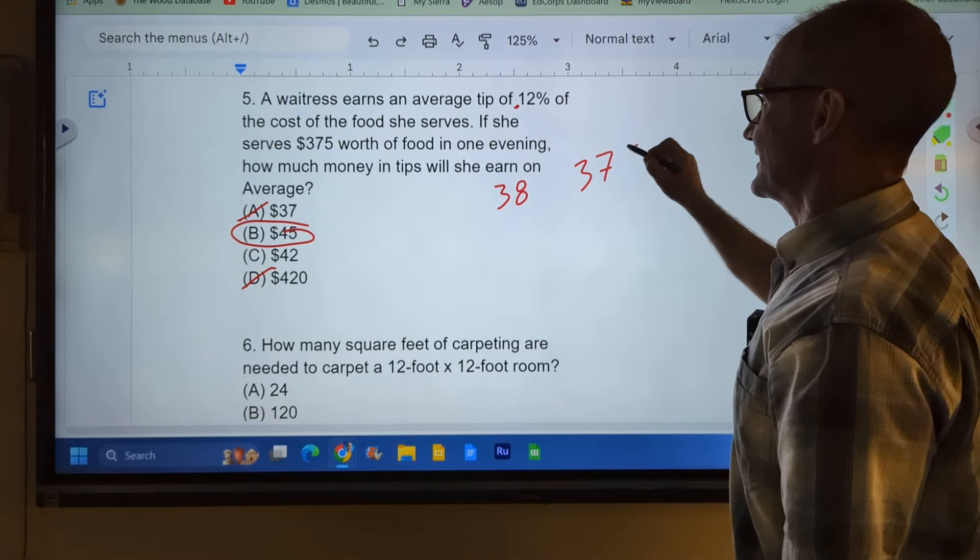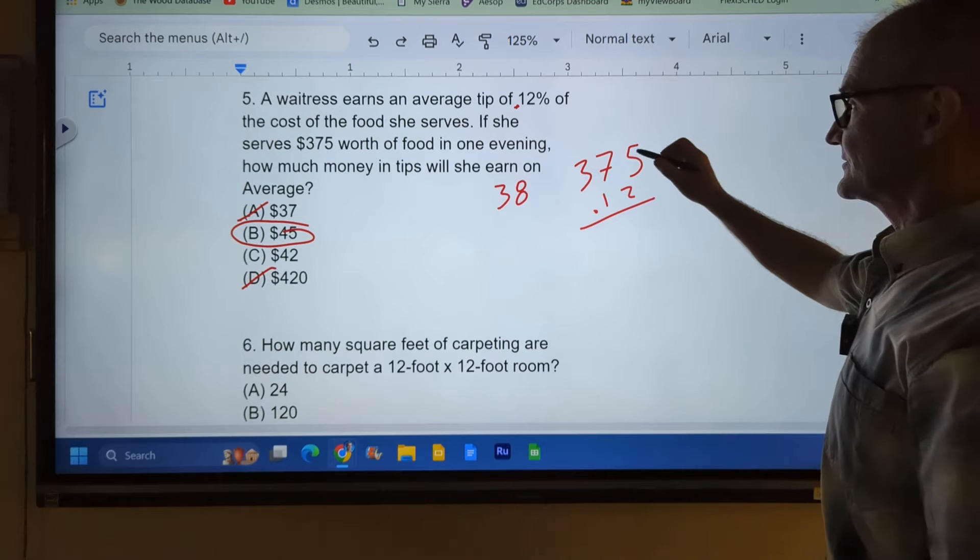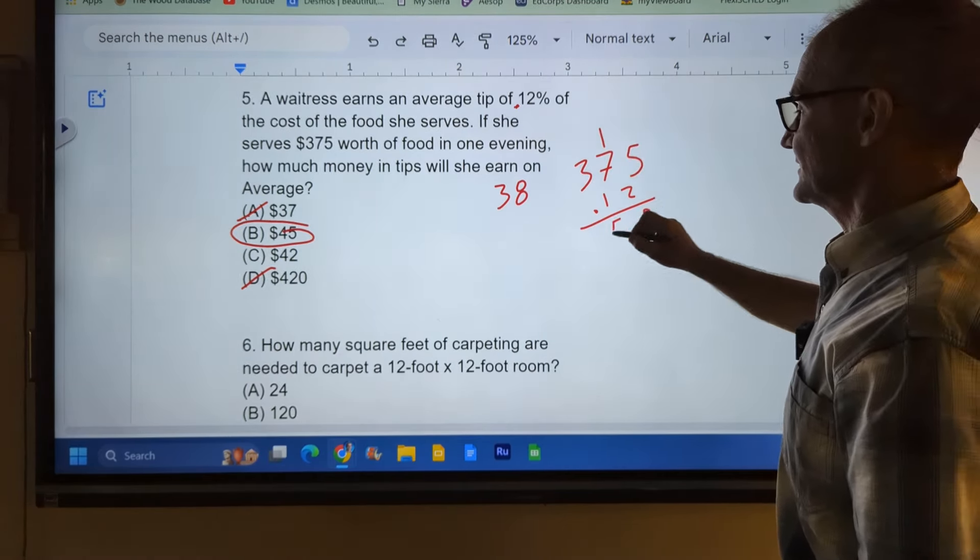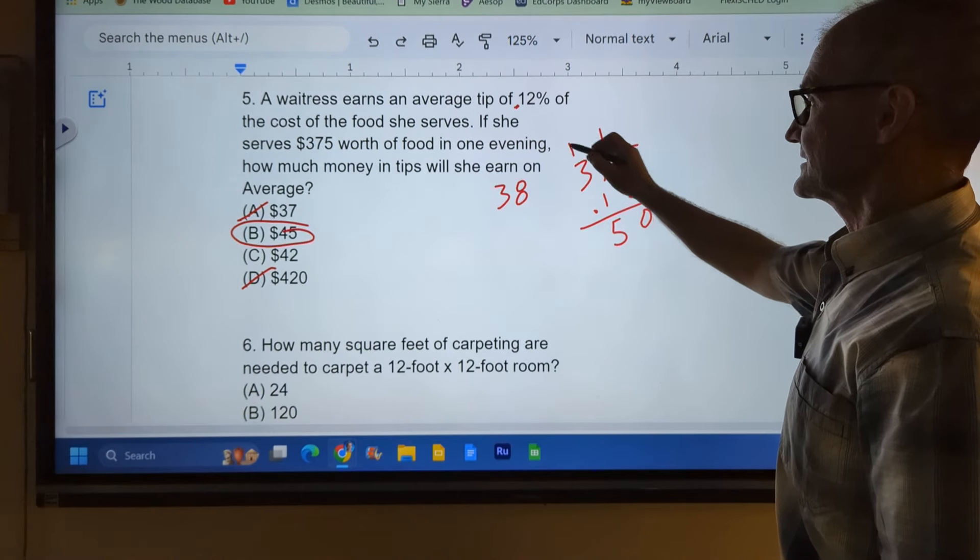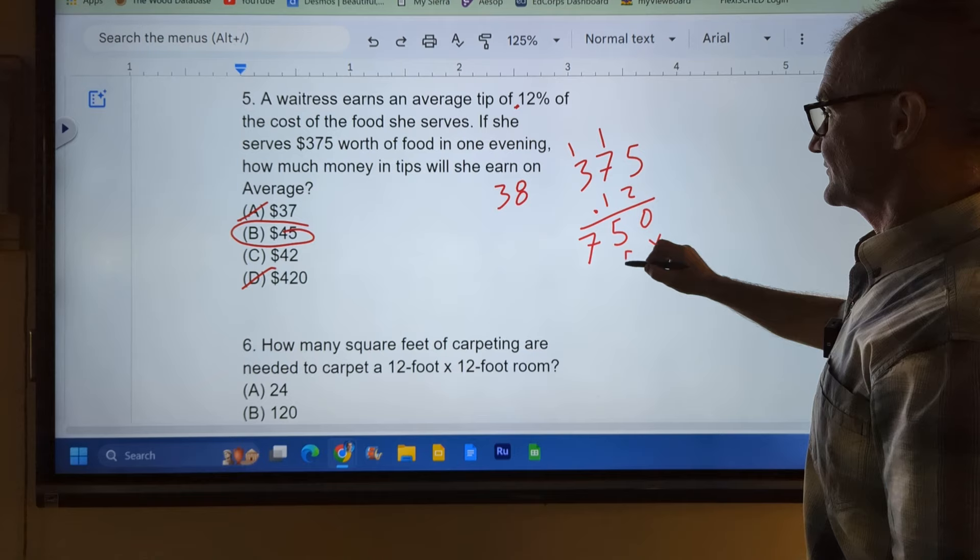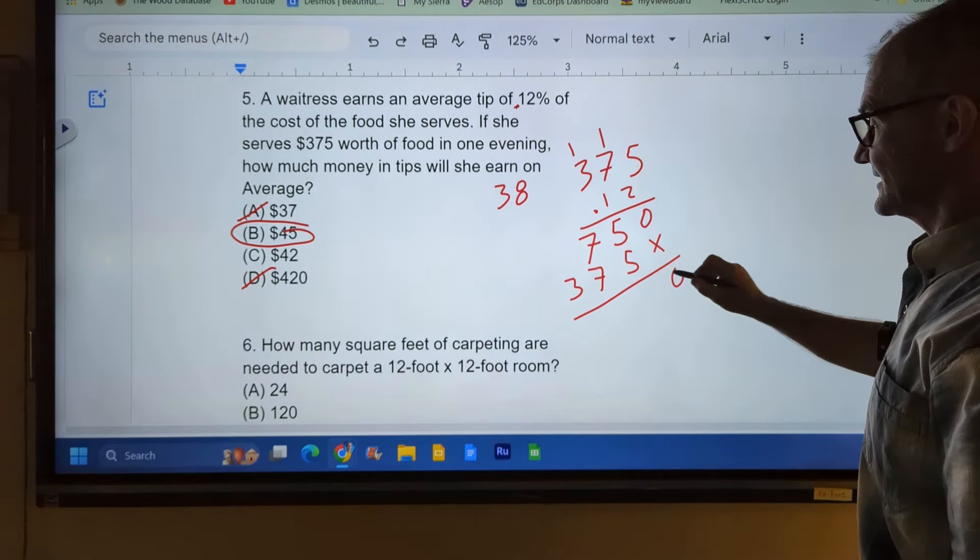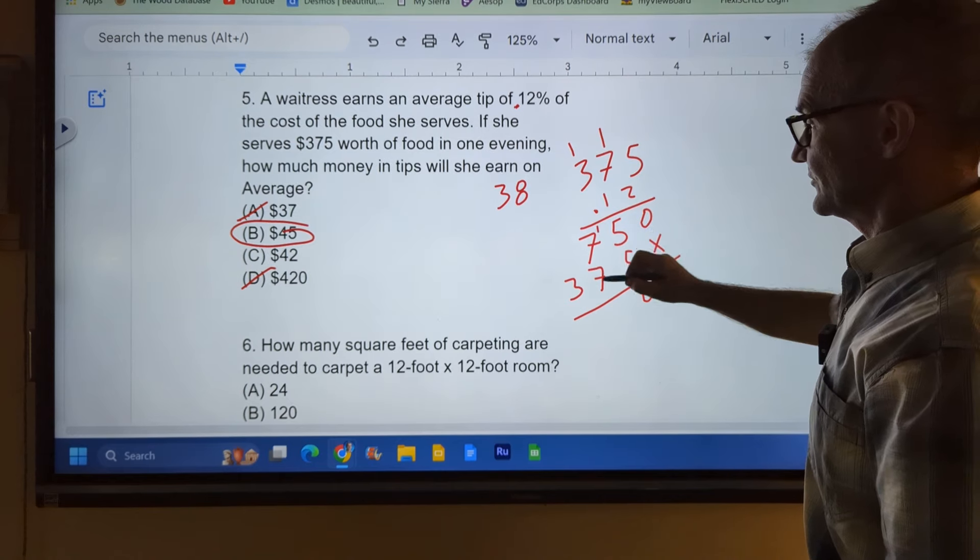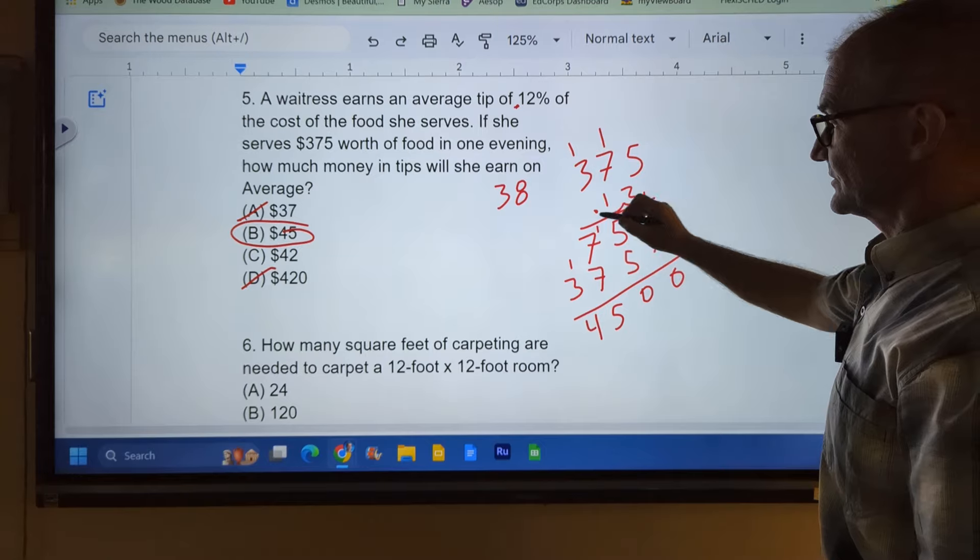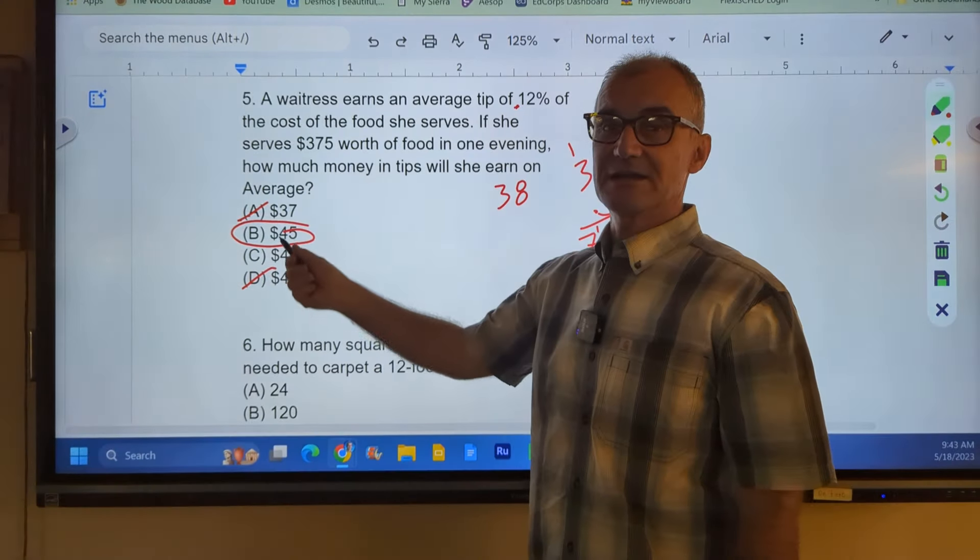If I had more time, I could multiply it out. I would take that 375, multiply it by the 0.12. Two times 5 is 10. Carry the 1, 14 and 1 is 15. Carry the 1, 6 plus 1, 7. Placeholder, 1 times 5, 1 times 7, 1 times 3. I add straight down 0, 10, 14, 15. Carry the 1, 45. My decimal is over one, two. My decimal is over one, two. And I can see it's forty-five.